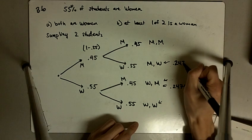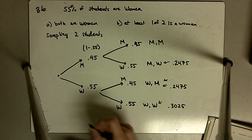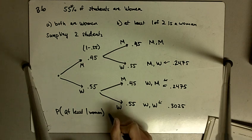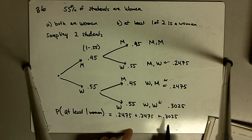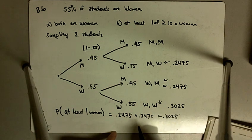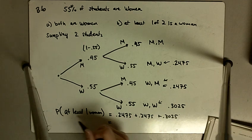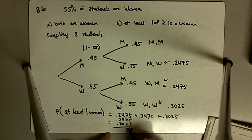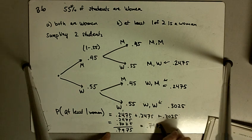This is 0.2475, 0.2475, and 0.3025. So, the probability of at least one woman is going to equal 0.2475 plus 0.2475 plus 0.3025. That is going to add up to 0.7975.